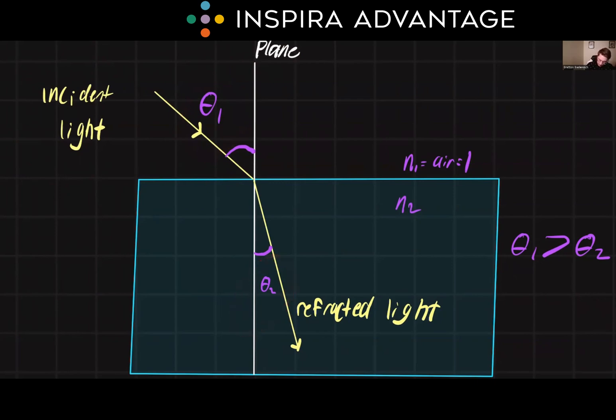In this example, the N1 is air, which just has a refraction index of 1, which means not very bendy at all, and then N2 of water is going to be a bit higher, say 1.3.